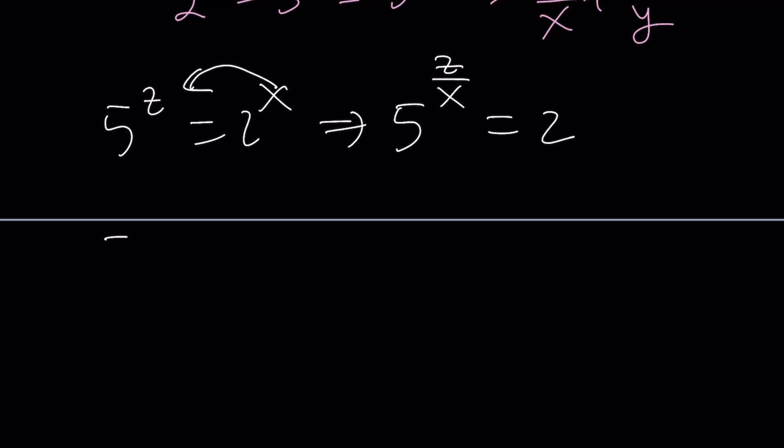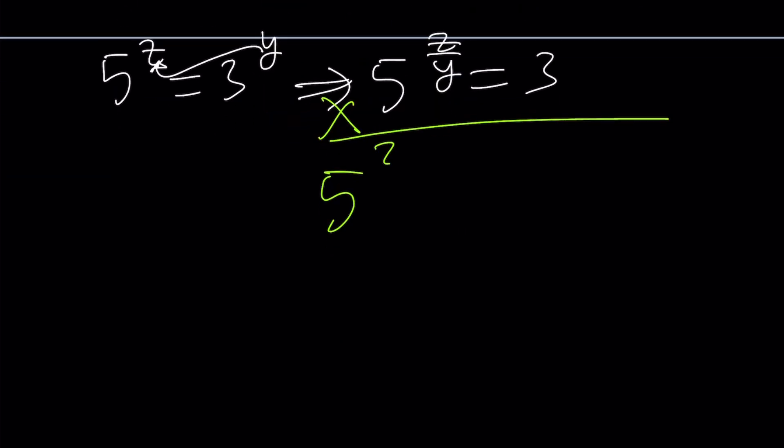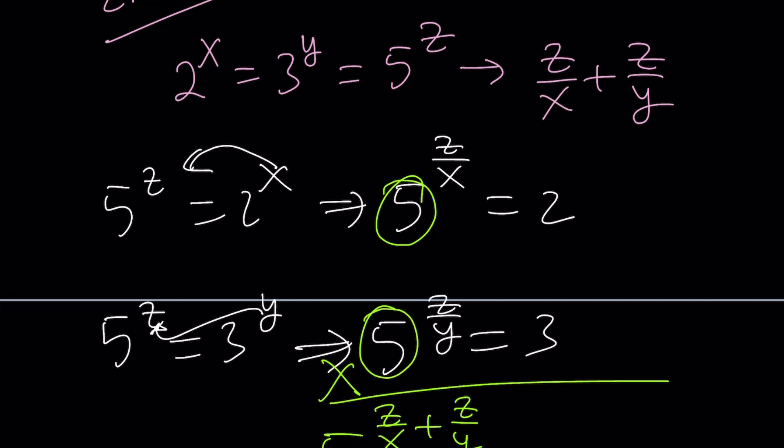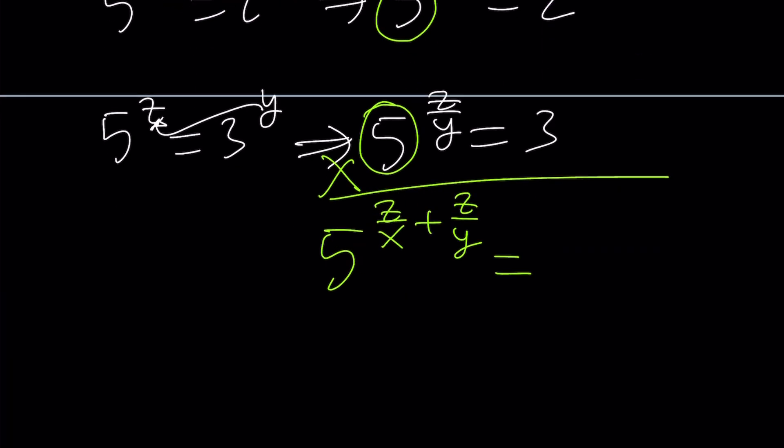And similarly, if we have 5^z = 3^y, we can divide by y here. And that gives us 5^(z/y) = 3. And we're looking for z/x + z/y. Let's multiply these two equations side by side. The left hand side gives us 5^(z/x + z/y). Because when you multiply two powers with the same base, you add the exponents. And what is 2 × 3? 6.